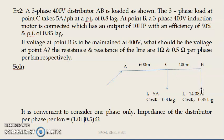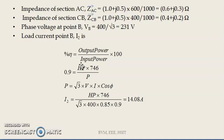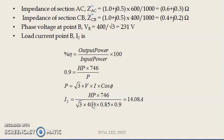What is ICB? It is I2. How did we get 14.08? Efficiency equals output power divided by input power times 100. Efficiency is 0.9 and output power is given in HP — convert to watts by multiplying by 746. Input power P equals root 3 times V times I times cos phi for three phase. So I2 equals (HP × 746) divided by (root 3 × 400 × 0.85 × 0.9), which gives 14.08 amps. This is your I2 load current, but it must be converted into a vector.